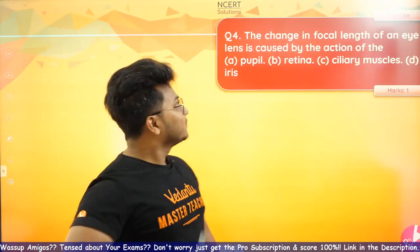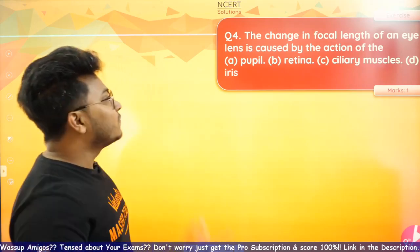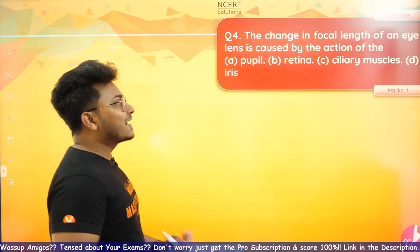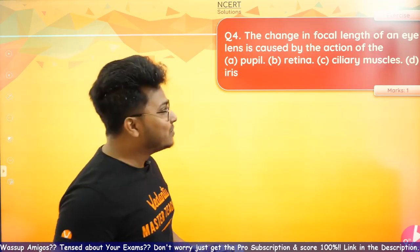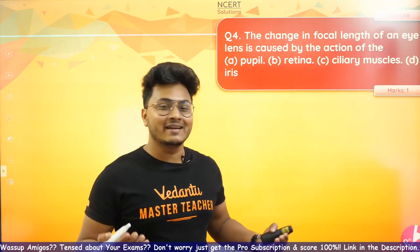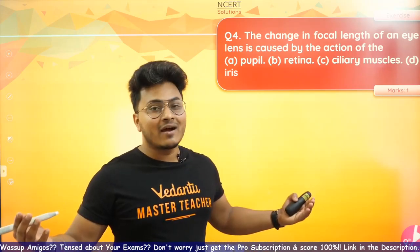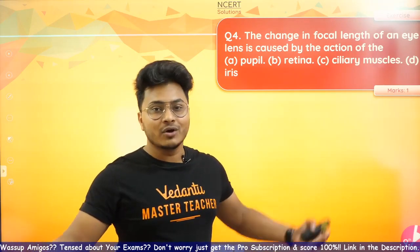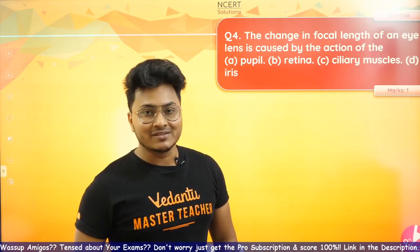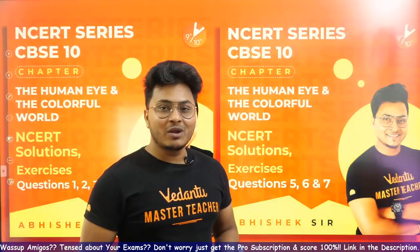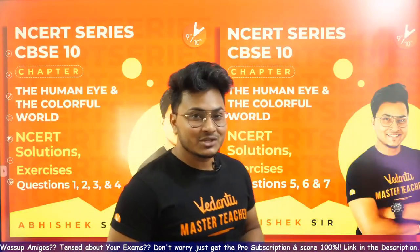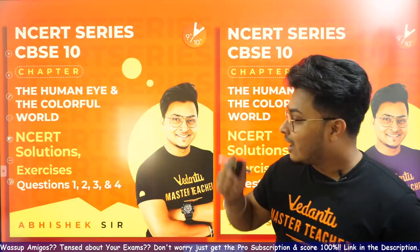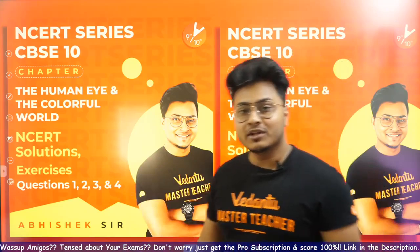The last question for today: 'The change in focal length of an eye lens is caused by the action of — pupil, retina, ciliary muscles, or iris?' By now this question is pretty clear. The answer is of course the ciliary muscles.